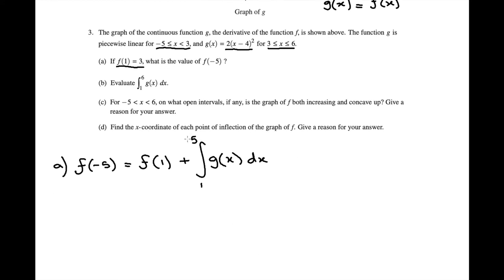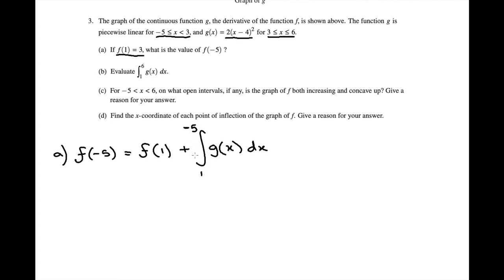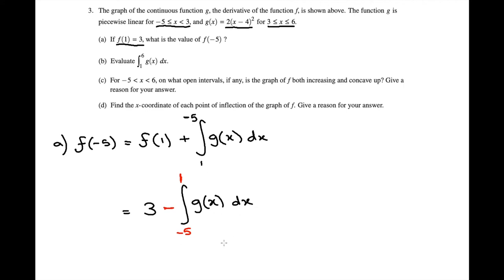However, notice that my lower bound is actually greater than my upper bound. That can be a little annoying to deal with, so I'm going to switch these bounds and add a negative sign — which is perfectly legal. So we have f(1), which we know is 3, and then we tag on a negative sign times the integral from negative 5 to 1 of g(x) dx. The reason is just that it's much easier to work with the bounds in that order.